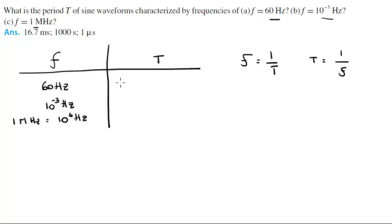So you get for the first one, 1 divided by 60 is 0.0166 seconds or you can convert it to milliseconds, it gives you 16.67 milliseconds.